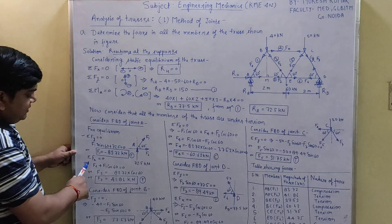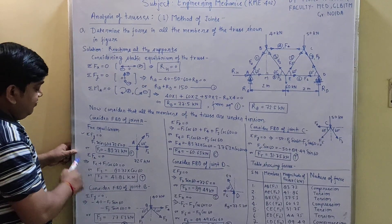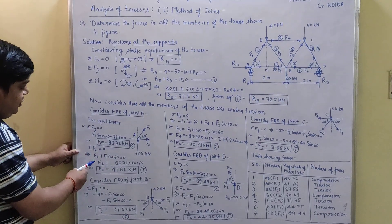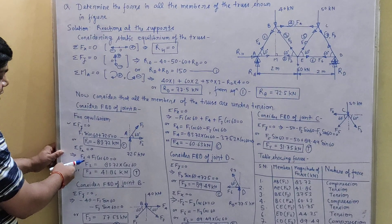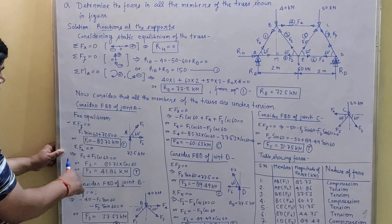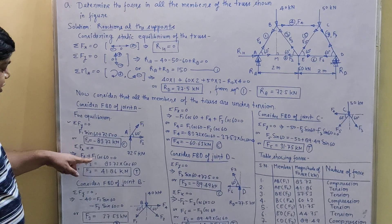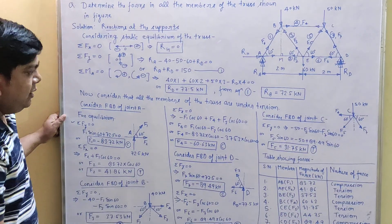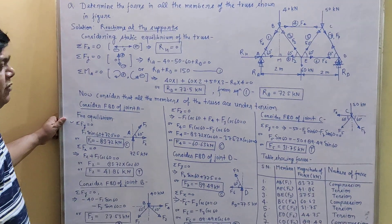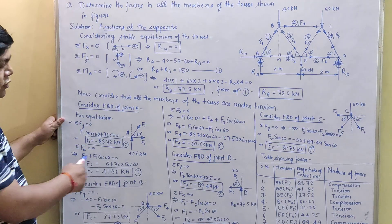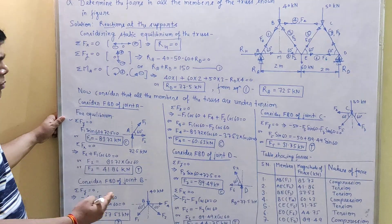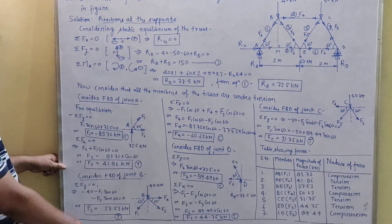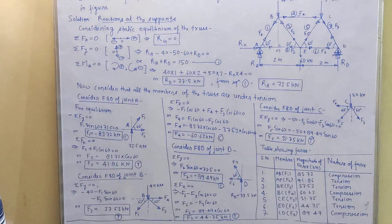We could also write ΣFx = 0 first, but if we do that we have to leave it with two unknowns, F1 and F2. We must solve the vertical equation first, then use the value of F1 in the horizontal equation to find F2. When you solve two or three problems yourself, you will be able to understand in which direction to first take the equilibrium to solve a particular joint.